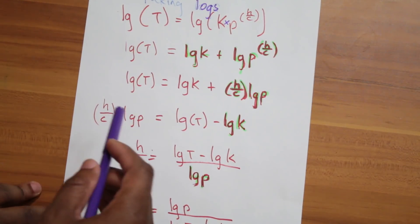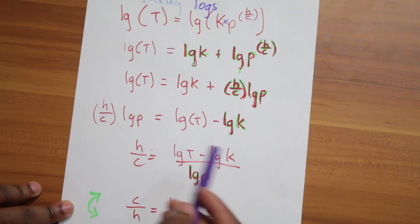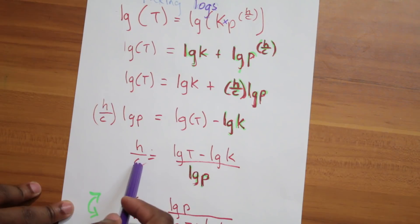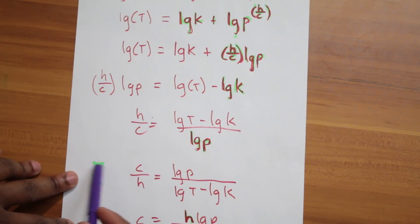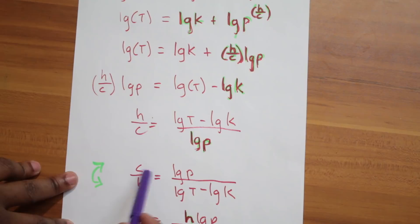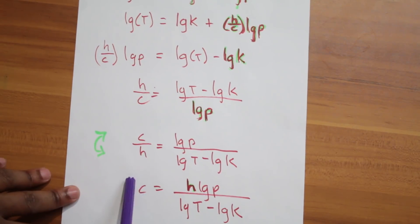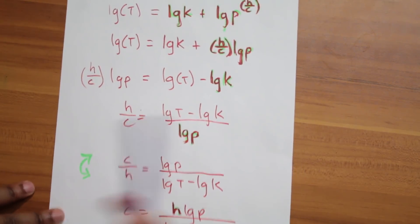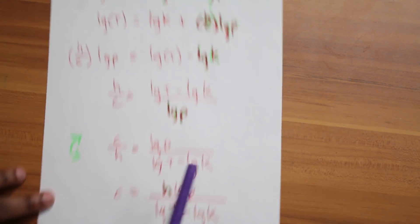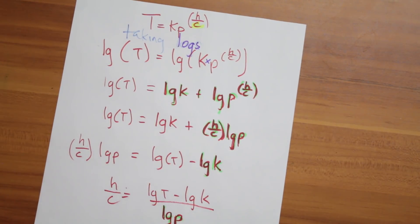Then bring down the log p. Remember c is the subject of the formula, and c is underneath, so do a little rearrangement — flip them around — and now you can say c equals h over that expression. That was the 2016 question. This shows the way they bring it where you take logs, rearrange, and do some rearranging with the logs.